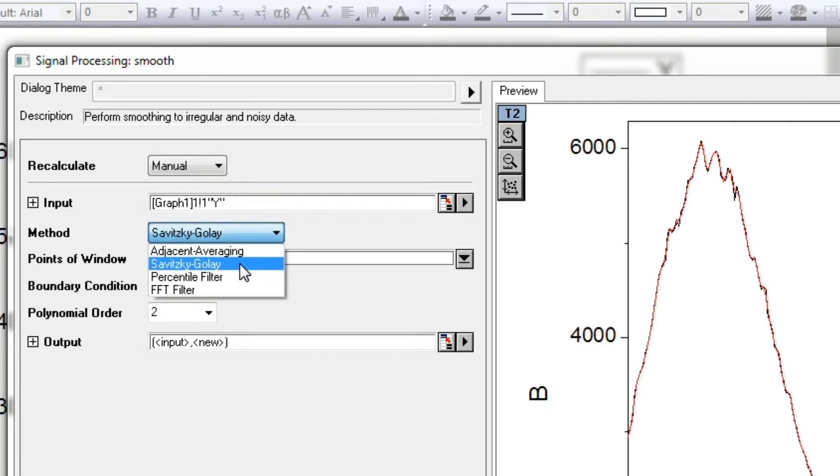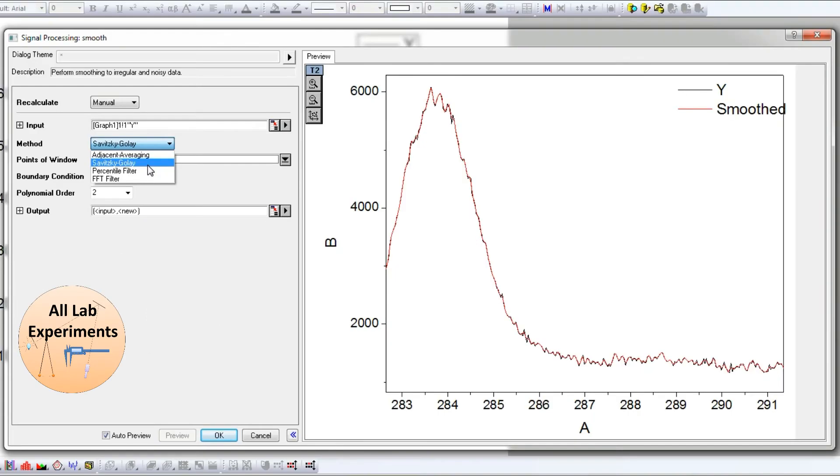Basically we have Adjacent Averaging and Savitzky-Golay, two options to smooth our data. People usually frequently switch between these two methods, but it is necessary to know which one is OK for which data and up to what extent we can smooth.